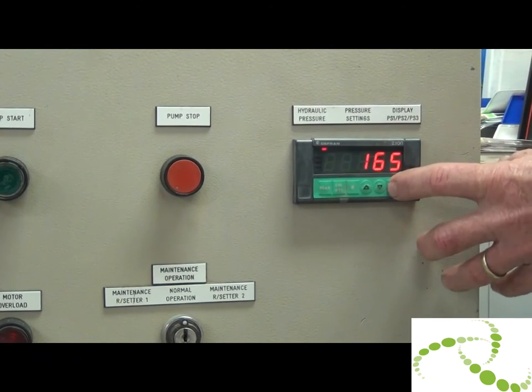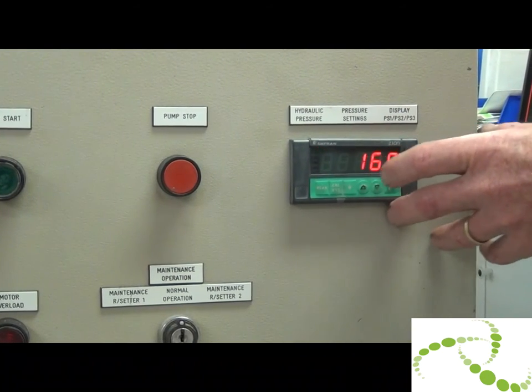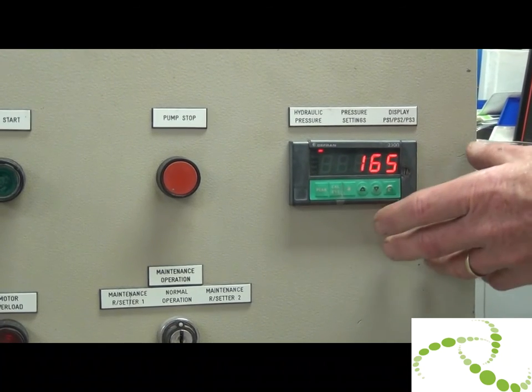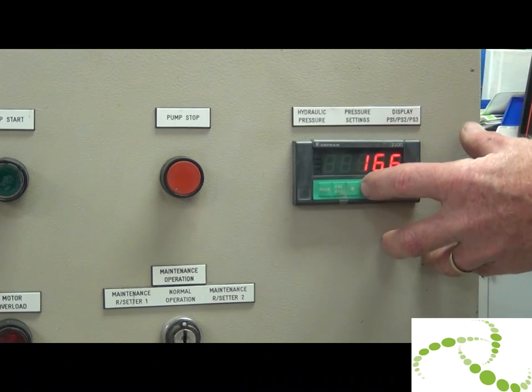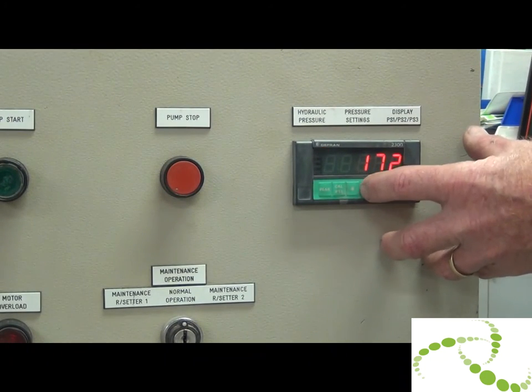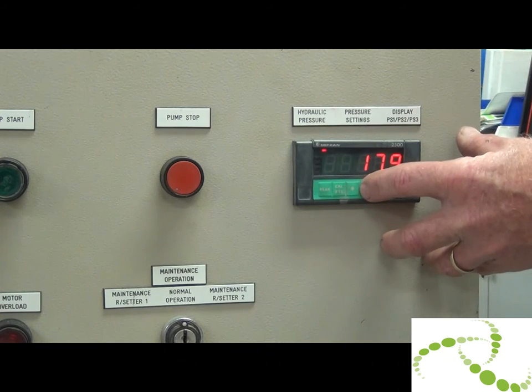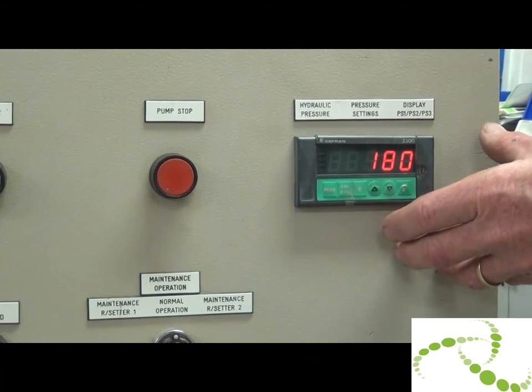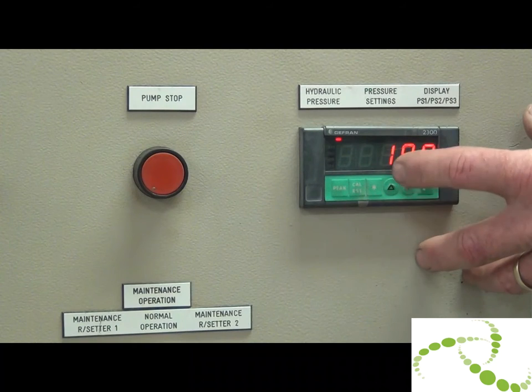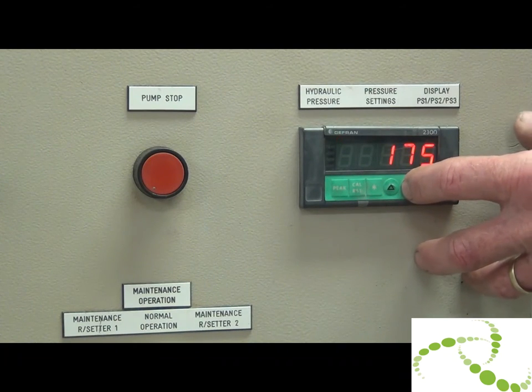So you just press the F key, that's rivet setter number 1, 165 bar. You just press the arrow key to your desired pressure, 180 bar. If it's too high then you just go the opposite, you go down.